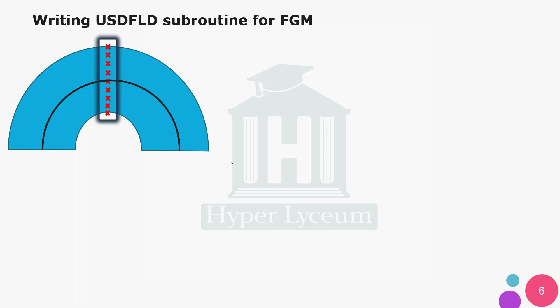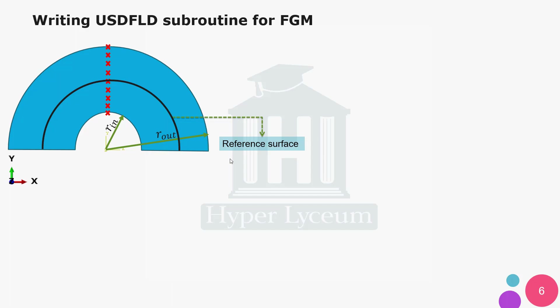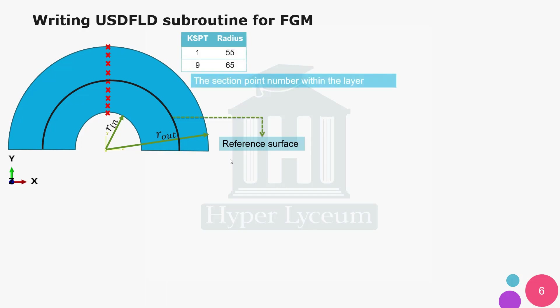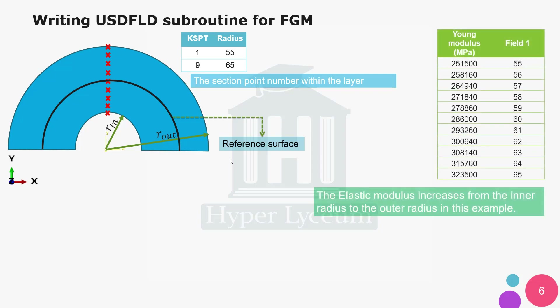Using nine section points through the thickness of the cylinder, and with the reference surface in the same position as the mid surface, the number of section points on top and bottom of the reference surface are the same. The section point numbers vary from 1 to 9 and the inner radius changes from 55 to 65. As you can see in the chart, by increasing the radius from inside to outside, Young's modulus increases. In this simulation we use shell elements to calculate the position of radius section points and coefficients c1 and c2.